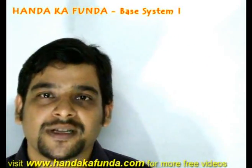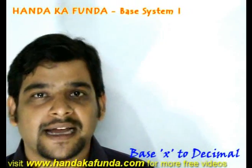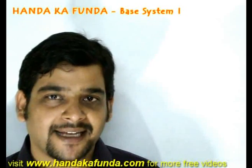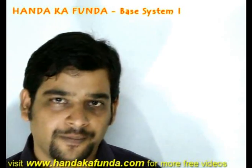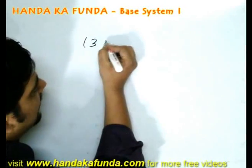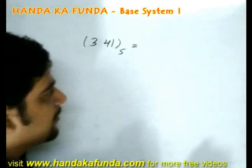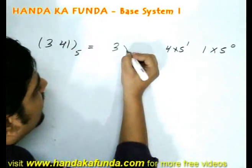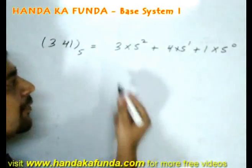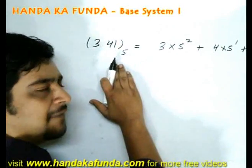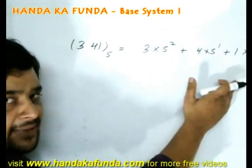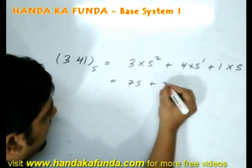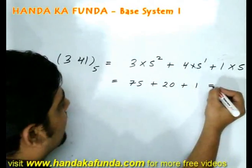Now let's look at the reverse process. If I am given a number in base 5 — say 341 in base 5 — and I want to convert it to the decimal system, I multiply each digit by increasing powers of the base. In base 5, the valid digits are 0, 1, 2, 3, and 4. So: 3 times 5 squared is 75, plus 4 times 5 to the power 1 is 20, plus 1 times 5 to the power 0 is 1. That gives 96. When converting from decimal to base 5 we divide; the reverse is multiplication.